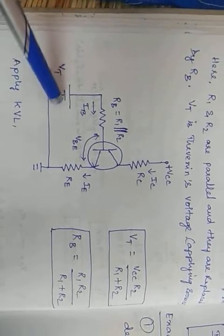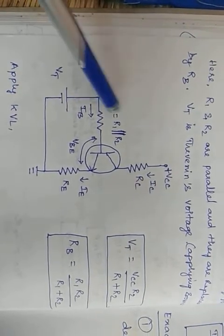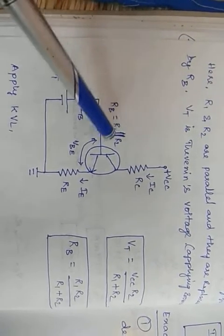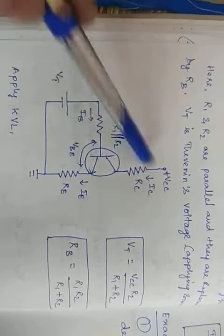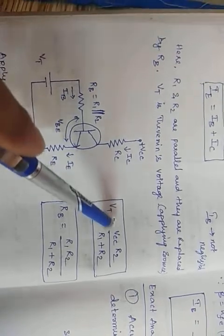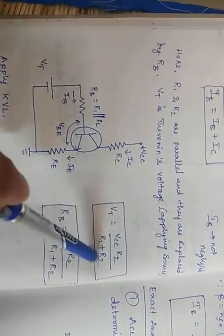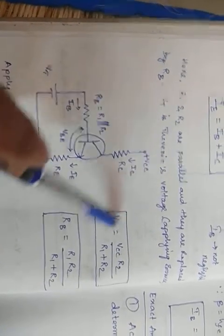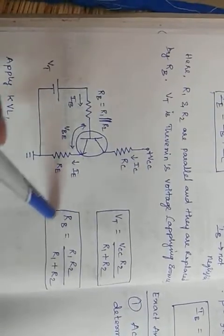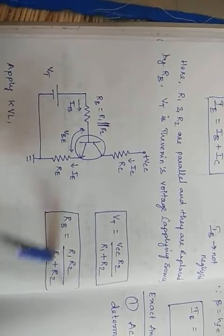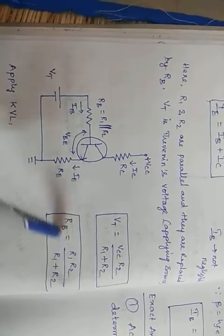In the simplified voltage divider circuit for exact analysis, VT (Thevenin's voltage) = VCC × R2 / (R1 + R2), and RB is the equivalent parallel resistance: RB = R1×R2 / (R1 + R2). The collector and emitter sides remain the same as before.